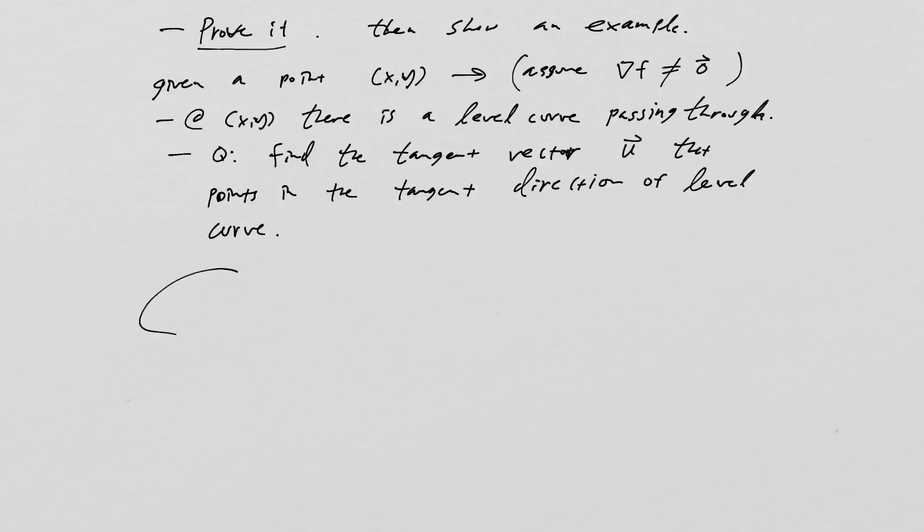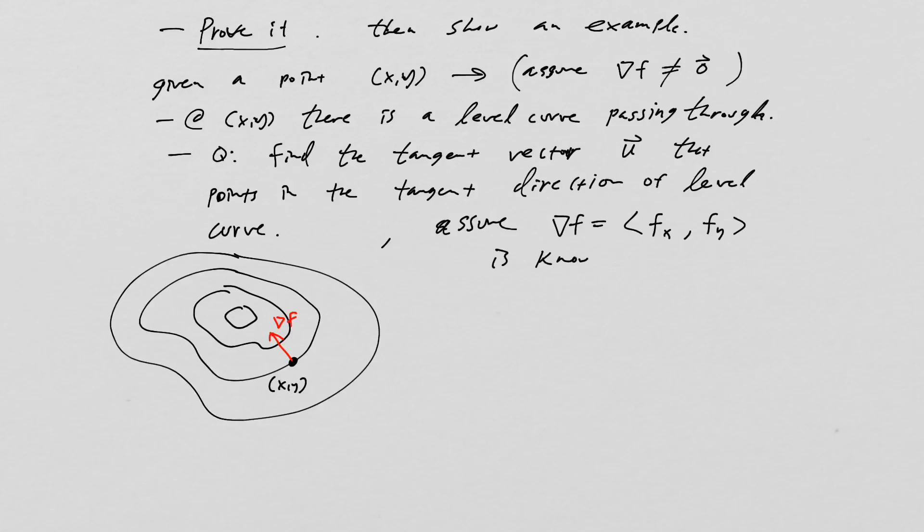So we need to do that. Again, the idea here is here is our surface and it's formed by a bunch of level curves and we're on a specific point which we'll call x,y. And I know also that our vector grad f points in a specific direction. In fact, we can compute—assume that grad f is known. These are known values, specific numbers that we've been able to compute.